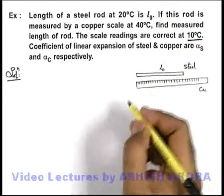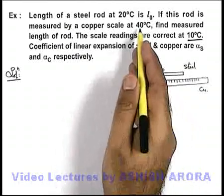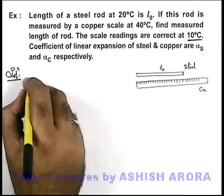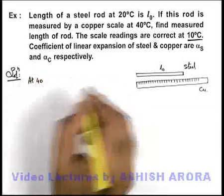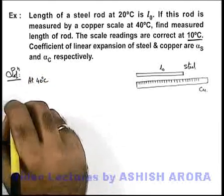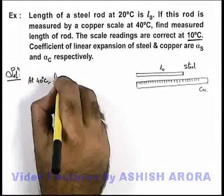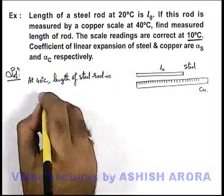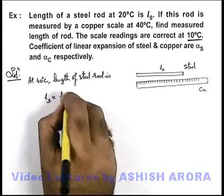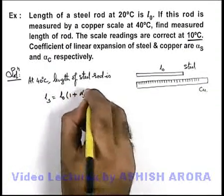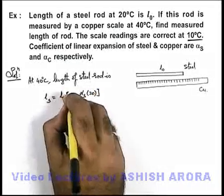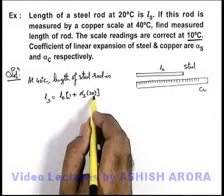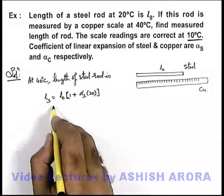At 40 degree centigrade, if we are going to measure the length of this rod using a copper scale, we first find the actual length of the steel rod at 40 degree centigrade. The length of the steel rod at 40 degree centigrade is l_s = l₀(1 + α_s × 20), because the initial length was given at 20 degree centigrade, so at 40 degree centigrade — that is 20 degrees higher — the length of the steel rod is given by this expression.